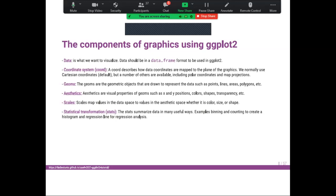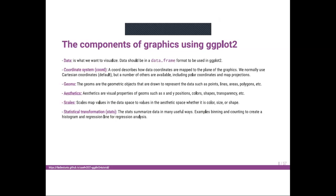We also have scales, which map values in data space to the aesthetics space, for example color, size, or shape. And we have statistical transformations, which summarize data in many useful ways — for example, binning and counting to create a histogram, or a regression line for regression analysis.